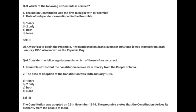Consider the following statements. Which of these is incorrect? One: The Preamble states that the Constitution derives its authority from the people of India. Two: The date of adoption of the Constitution was 26th January 1950. Answer is B. The Constitution was adopted on 26th November 1949. The Preamble does state that the Constitution derives its authority from the people of India.